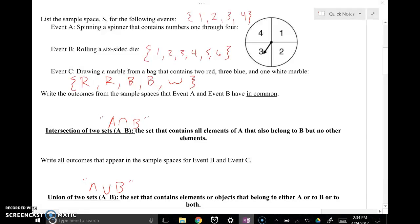Then it starts talking about outcomes. So that would be when you actually do this experiment, what could happen. What do the outcomes from the sample space of event A and event B have in common? Event A, that was with the spinner 1, 2, 3, and 4. Event B, that was with the six-sided die 1, 2, 3, 4, 5, and 6.